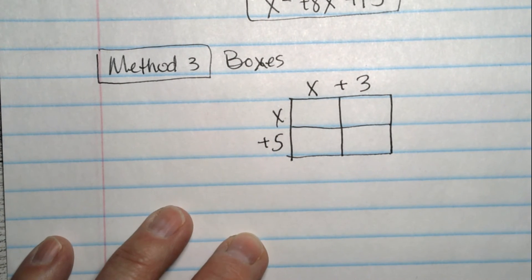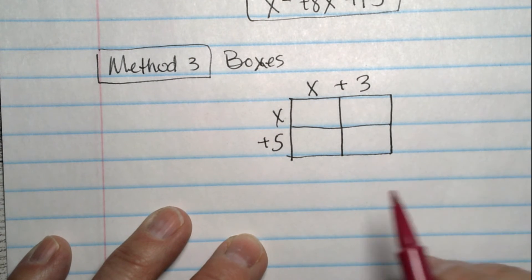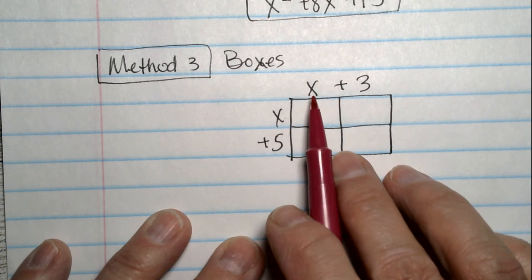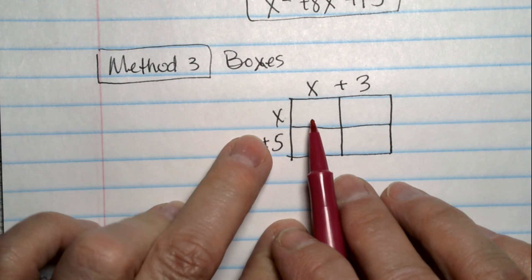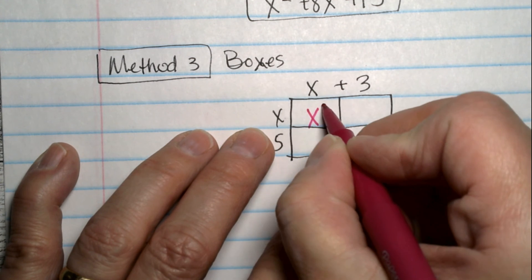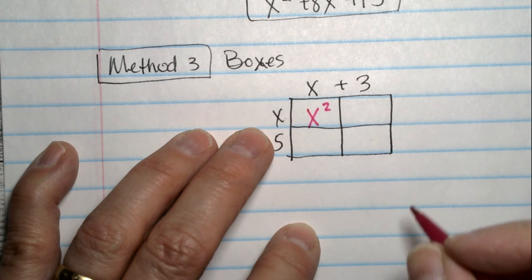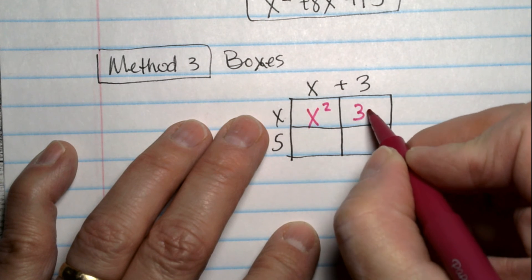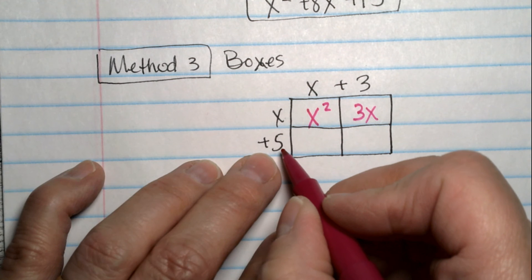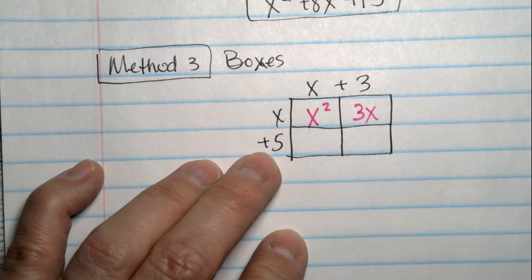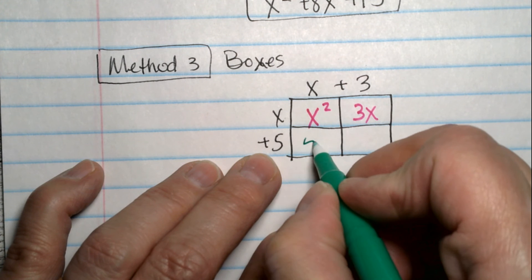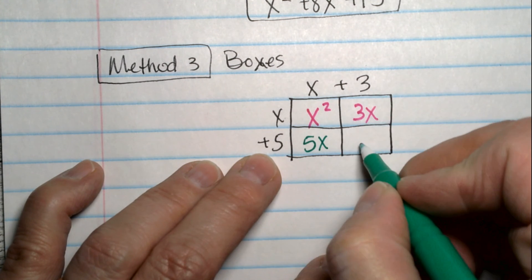And then from here, what I like about this method is you don't have to remember all the steps. I mean once you have it set up. You're just going to fill in the boxes with the answers. x times x is x squared. x times 3 is 3x. Then I move down to the 5. 5 times x is 5x. And 5 times 3 is 15.